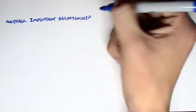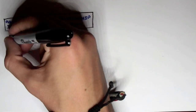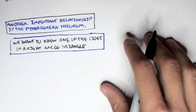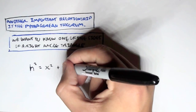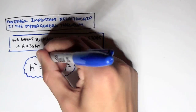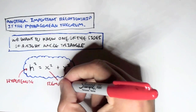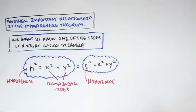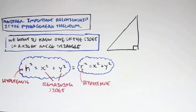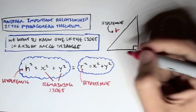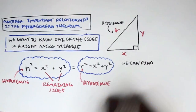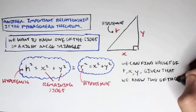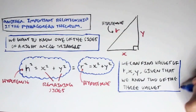Another important relationship is the Pythagorean theorem. This is used when we want to know one side of a right angle triangle but do not have the angle. The equation is: h squared equals x squared plus y squared, where h is the hypotenuse and x and y are the remaining sides. You might also see it as r squared equals x squared plus y squared, where r is the hypotenuse — exactly the same equation. We can find the values of r, x, and y given that we know two of the three values, with no angle needed.